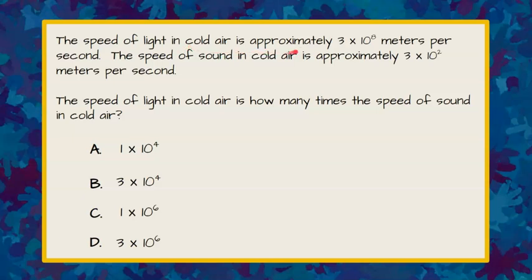The speed of light in cold air is approximately 3 times 10 to the 8th meters per second. The speed of sound in cold air is approximately 3 times 10 squared meters per second.